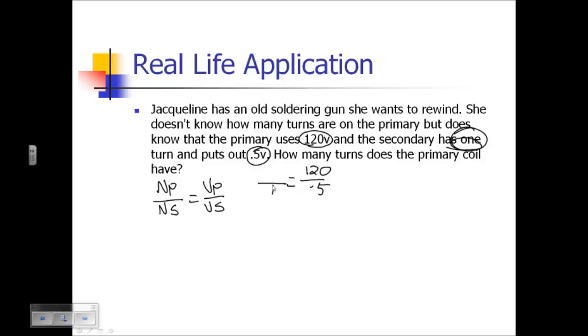Let me go ahead and cross multiply and solve this. So 120 times 1 divided by 0.5 will give us 240 turns on the primary coil.